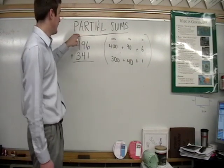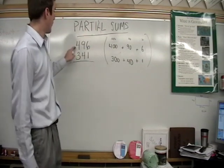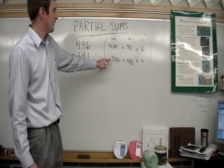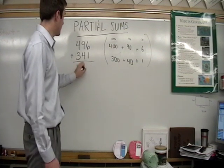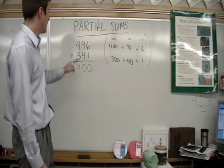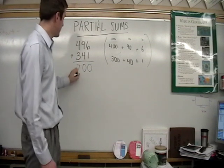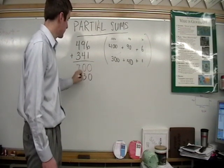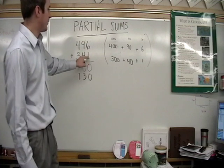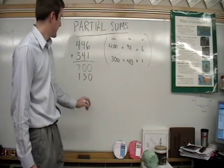So now let's add these parts. 400 plus 300 gives us 700. 90 plus 40 is 130. 6 plus 1 gives us 7.